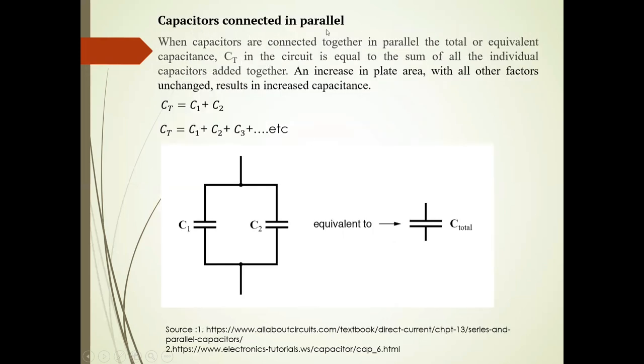If the capacitors are connected in parallel—here C1, C2 are connected in parallel—when they are connected together in parallel, the total capacitance Ct in the circuit is equal to the sum of all individual capacitors' capacitances.